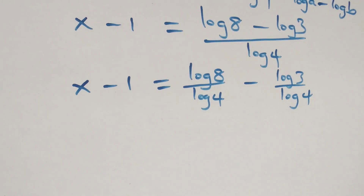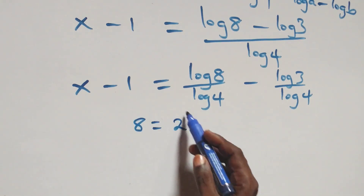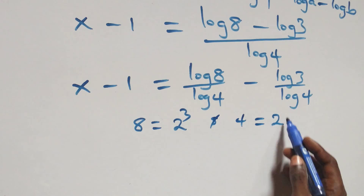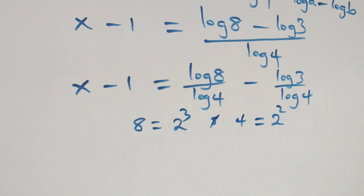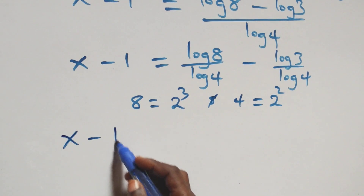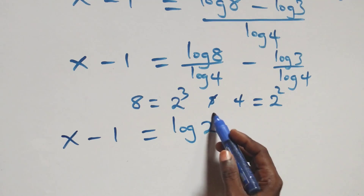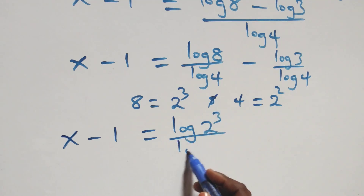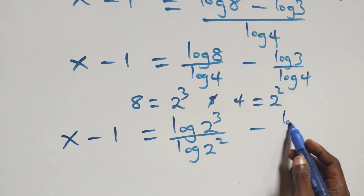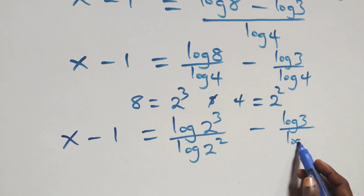We rewrite 8 as 2 times 2 times 2, which is 2 cubed, and 4 as 2 times 2, which is 2 squared. So x minus one equals log of 2 cubed over log of 2 squared, minus log 3 over log of 2 squared.